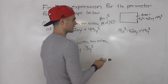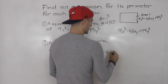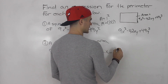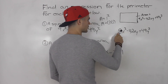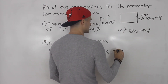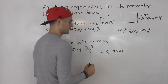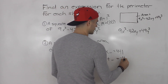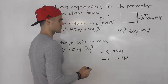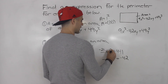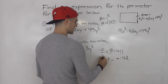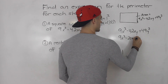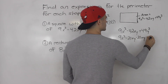We multiply a and c: 49 times 9 gives us 441. We've got to find two numbers that multiply to 441 and add up to negative 42. That would be negative 21 and negative 21. So we decompose: 9x squared minus 21xy minus 21xy plus 49y squared.